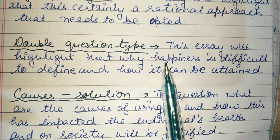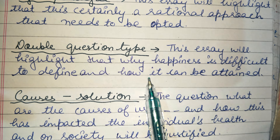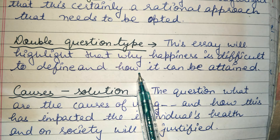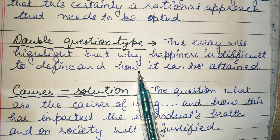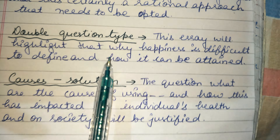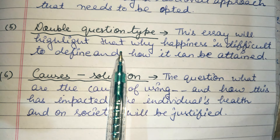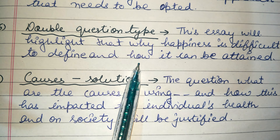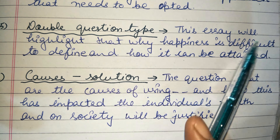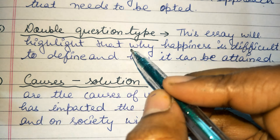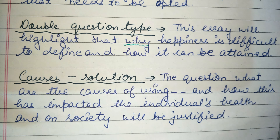In this type, there is no 'do you agree or disagree,' no 'discuss both views,' and no advantages or disadvantages question. When none of the standard types apply, the thesis line is simply: 'This essay will highlight...' — and then we add 'why' before the topic. Adding 'why' makes it a complex sentence, which helps improve the score.